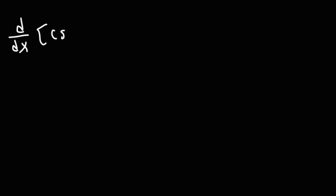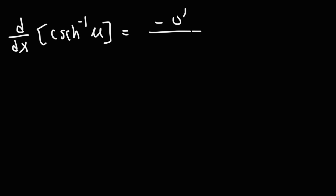The derivative for the inverse hyperbolic cosecant function of the variable u is going to be negative u prime over the absolute value of u times the square root of 1 plus u squared.